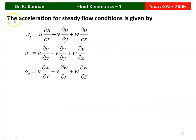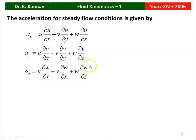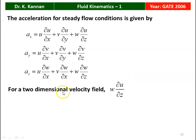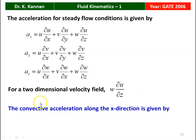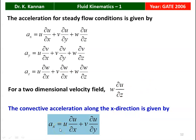The acceleration for steady flow conditions is given by Ax = u·(dou u/dou x) + v·(dou u/dou y) + w·(dou u/dou z). For a two-dimensional flow field, w = 0 and dou u/dou z = 0, so the convective acceleration along the x direction is Ax = u·(dou u/dou x) + v·(dou u/dou y).